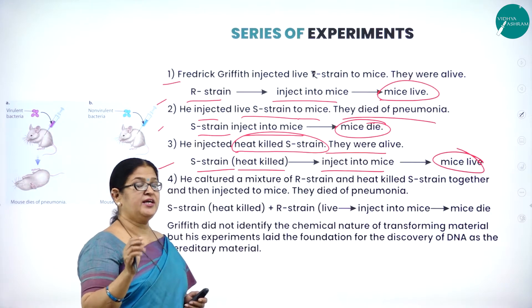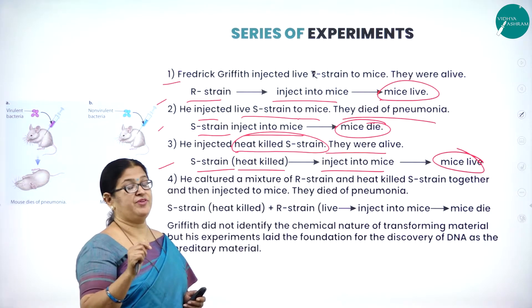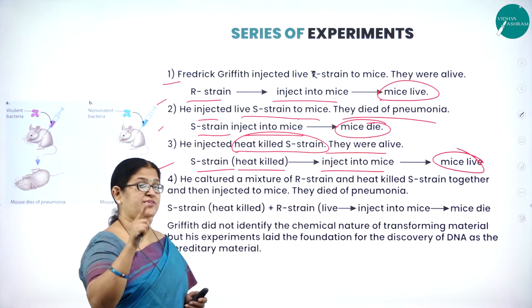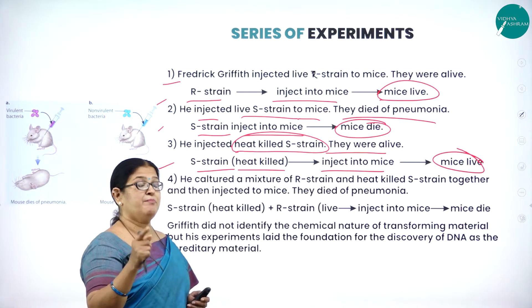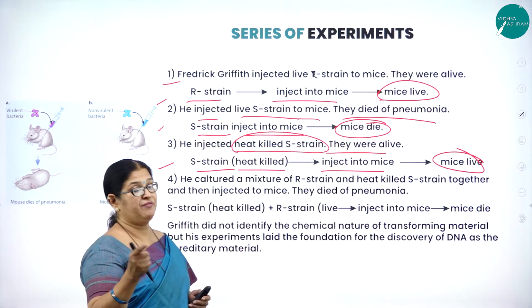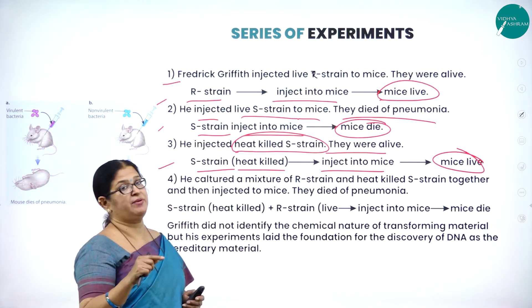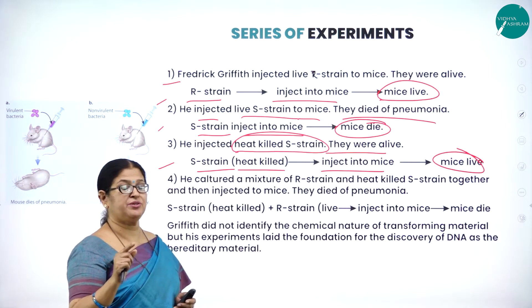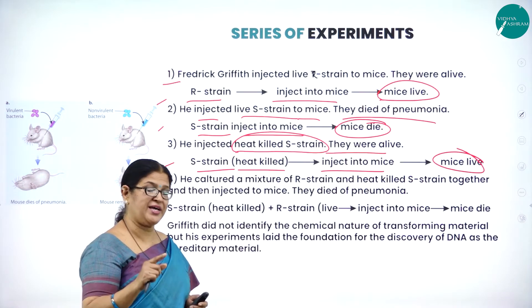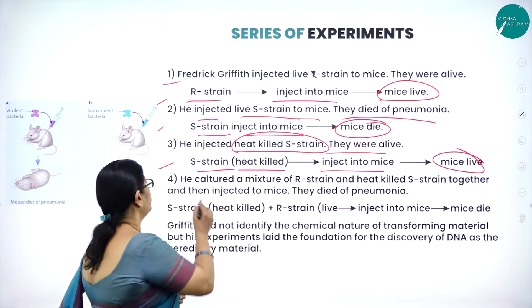He injected the heat-killed S-strain, which was actually disease-causing bacteria but had been subjected to heat. When this heat-killed S-strain bacteria was injected into the body of the mice, the mice lived.